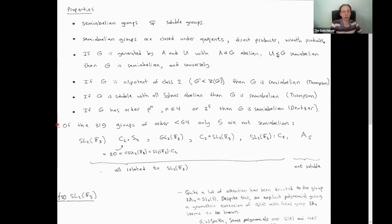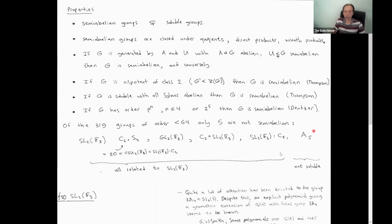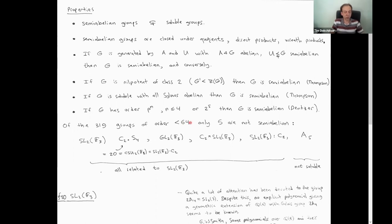It turns out that semi-abelian groups cover a lot of ground. If you look at groups of order less than 64, there are 319 of them — quite a large list — and only five of them are not semi-abelian. There is A5 of order 60, which is not soluble and the only non-soluble group in this list — remember, non-soluble groups are certainly not semi-abelian.